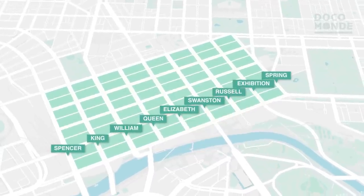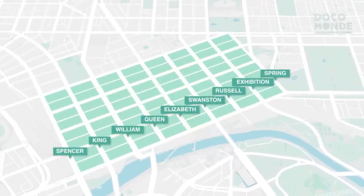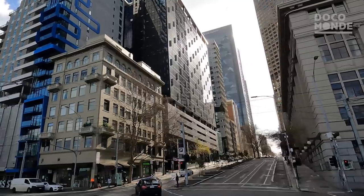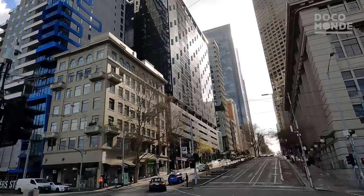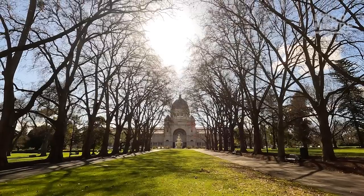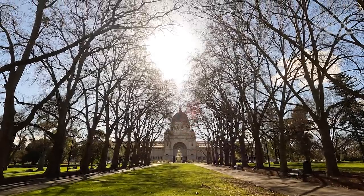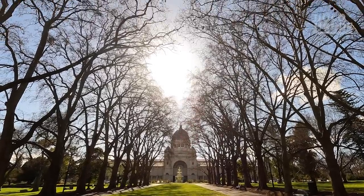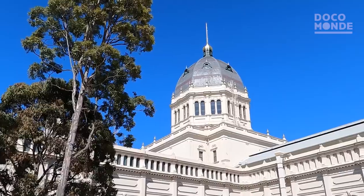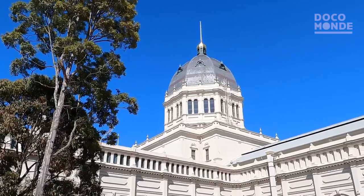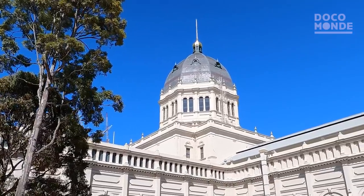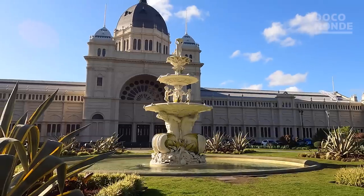The outlier here, Exhibition Street, was originally known as Stephen Street, and was renamed to celebrate the Melbourne International Exhibitions of 1880 and 1888.